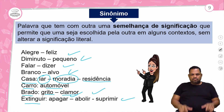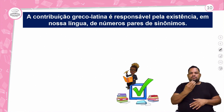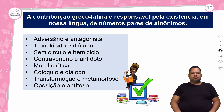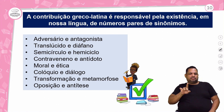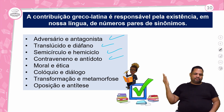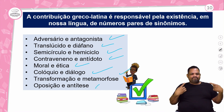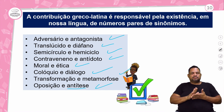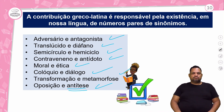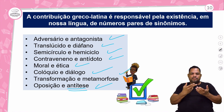A contribuição greco-latina é responsável pela existência em nossa língua de pares de sinônimos. Temos: 'adversário' e 'antagonista', 'translúcido' e 'diáfano', 'semicírculo' e 'hemiciclo', 'contraveneno' e 'antídoto', 'moral' e 'ética', 'colóquio' e 'diálogo', 'transformação' e 'metamorfose', 'oposição' e 'antítese'. Já conhecemos a palavra antítese lá das figuras de linguagem, nas figuras de palavras.